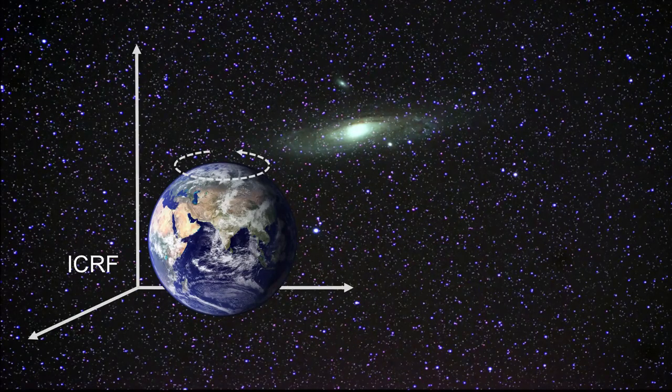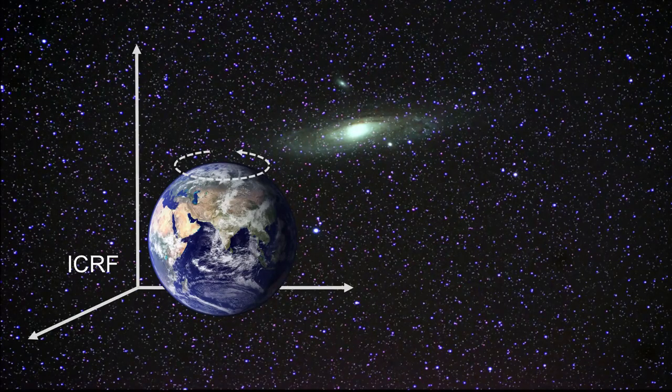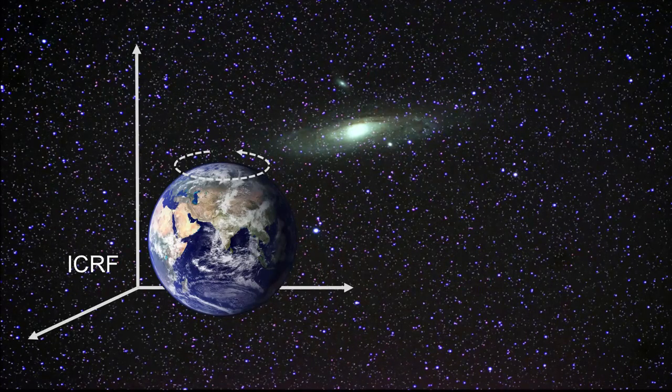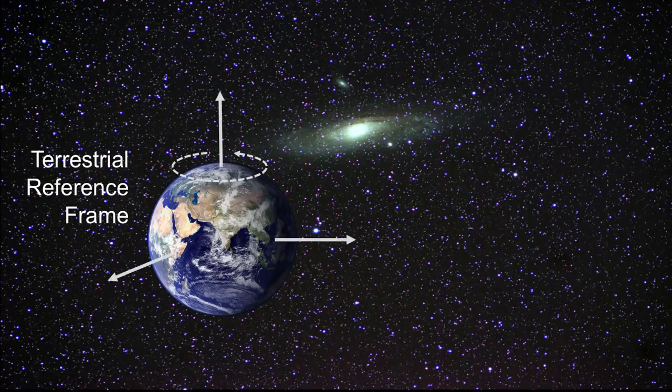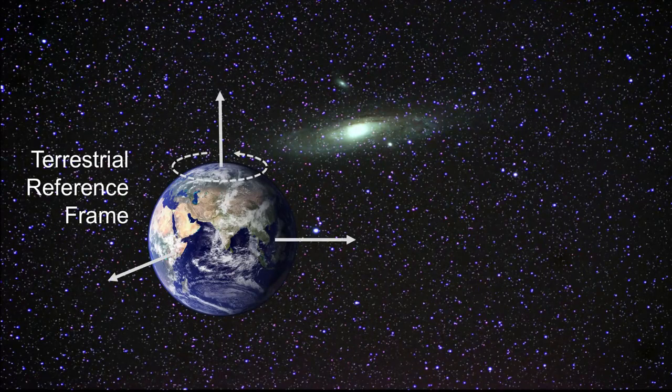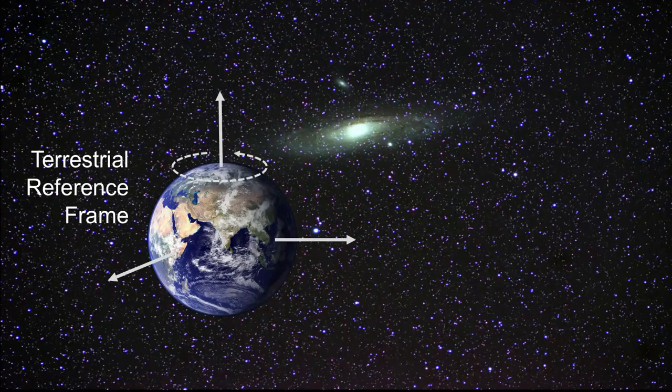However, for practical reasons, it's not possible to directly connect the celestial frame to a location on the Earth. Thus, we would prefer something more simple, like a 3D coordinate system, which has its origin in the center of the Earth and rotates along with it. Such a solution exists and it's called Terrestrial Reference Frame.